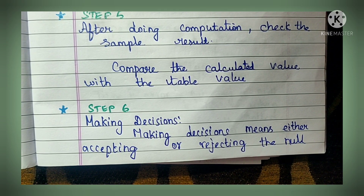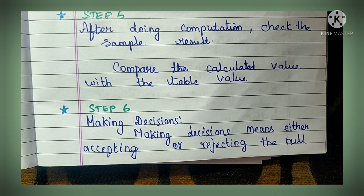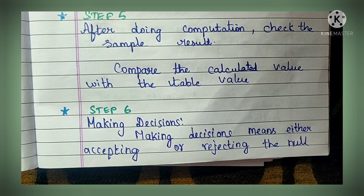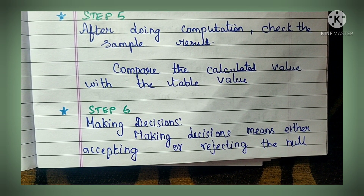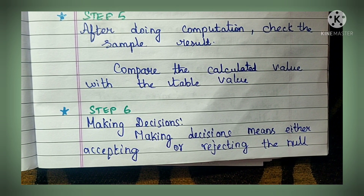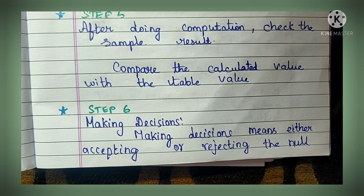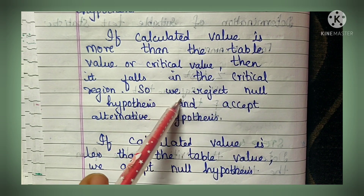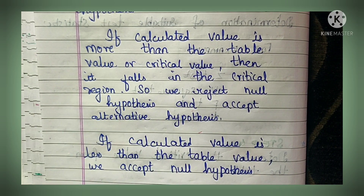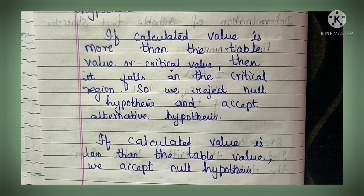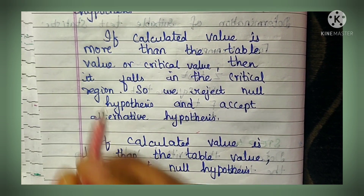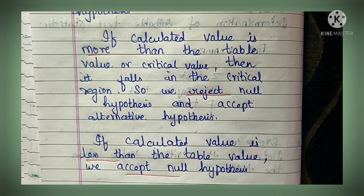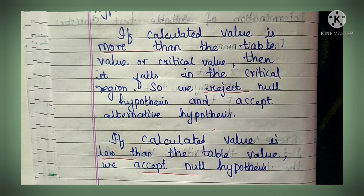If the calculated value is more than the table value, reject the null hypothesis. If the calculated value is more than the table value or critical value, it falls in the critical region, so we reject the null hypothesis and accept the alternative hypothesis (also called the research hypothesis). If the calculated value is less than the table value, accept the null hypothesis. This is the basic rule for all types of tests in testing of significance.